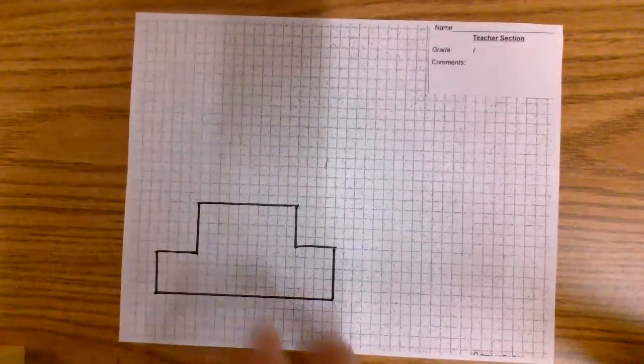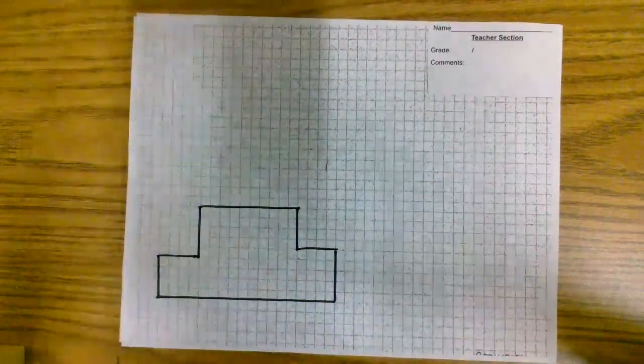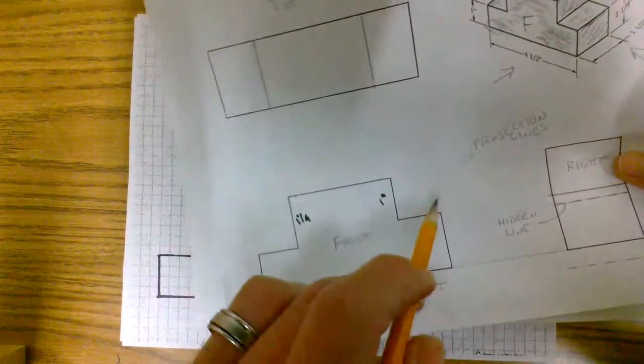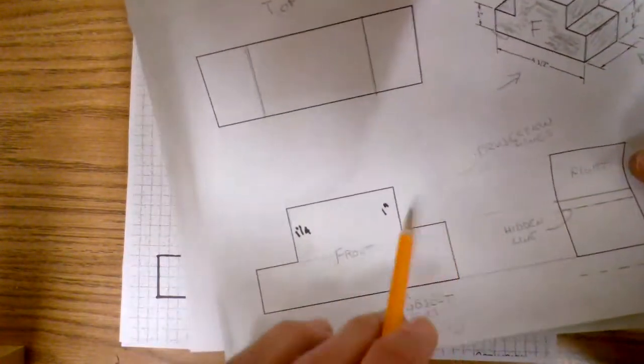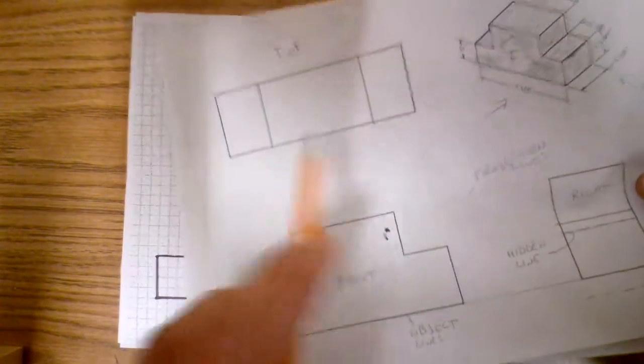Okay, so hopefully you watched that other video on how to do this front view. Okay, so now what we're going to do is we're going to project all these lines just like we did before. We're going to project them up and we're going to project them over to create the other views.